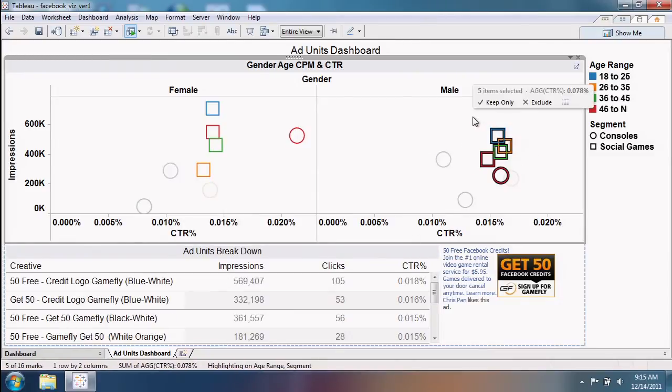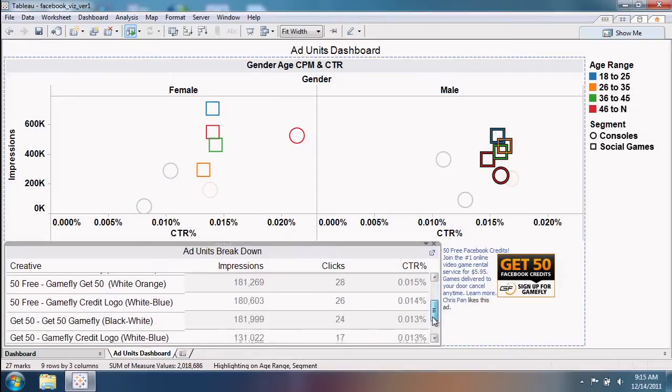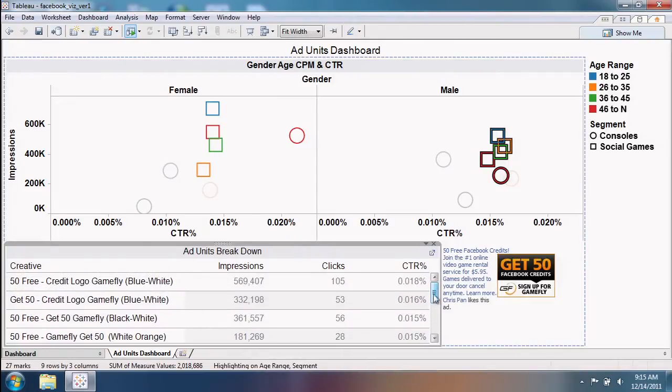Not only we saw this many clicks, we saw this much engagement, but in terms of driving performance, it drove this amount of sales, it drove this amount of leads. This creative is working best in this placement. How do we go continue to optimize those opportunities?